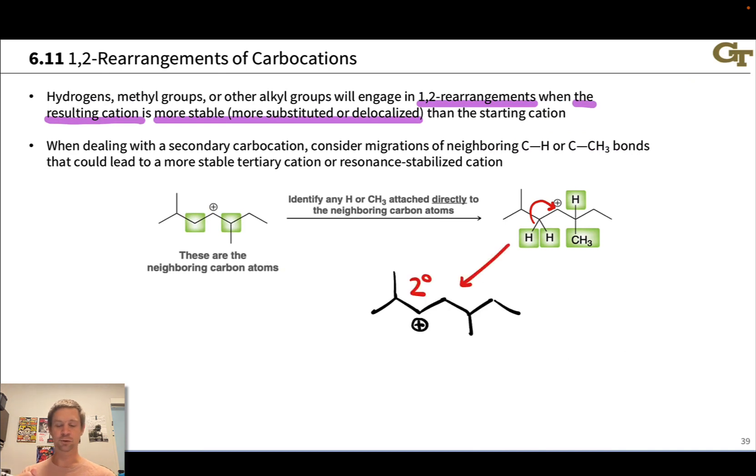This would lead to this carbocation right here, which is secondary. And of course, migrating the other C-H bond would lead to the exact same structure. At the right-hand carbon, which is this one here, we have a hydrogen and a CH3.